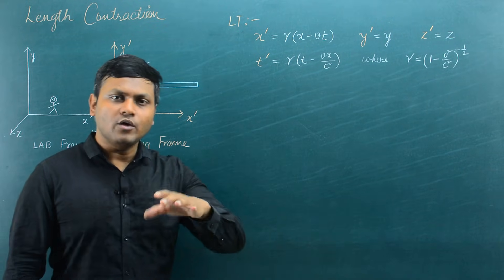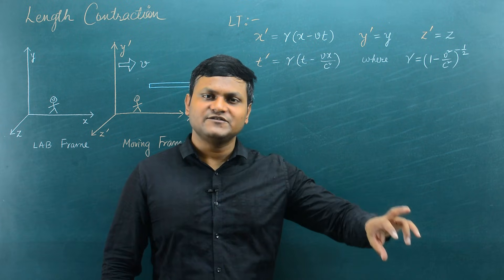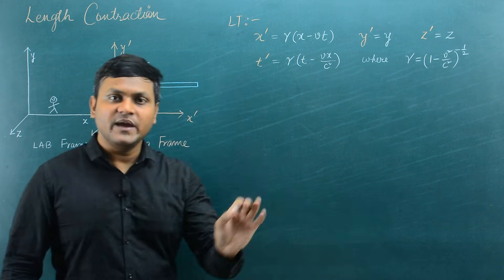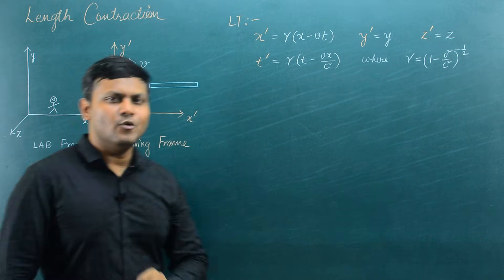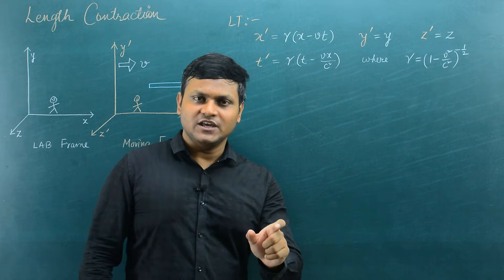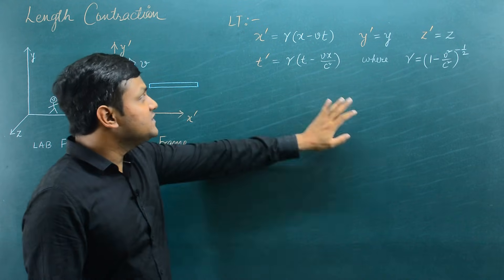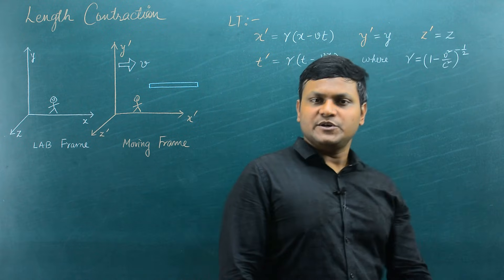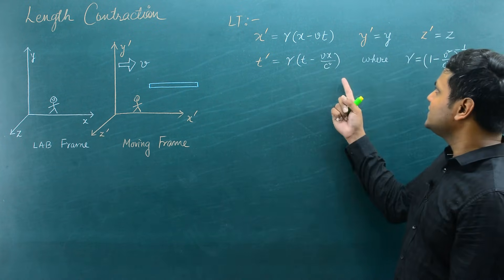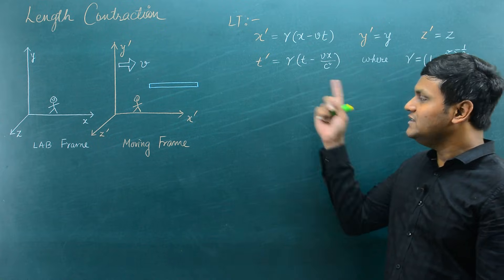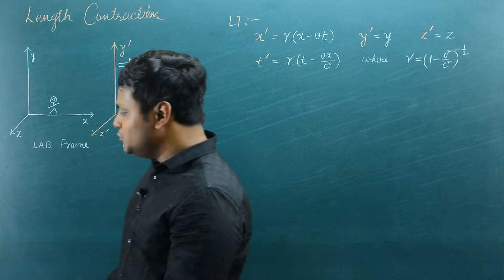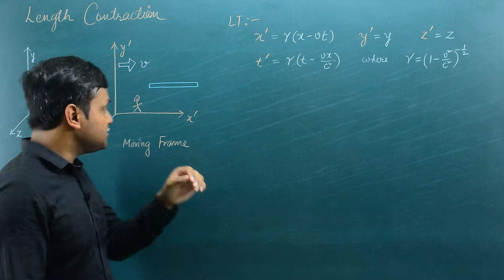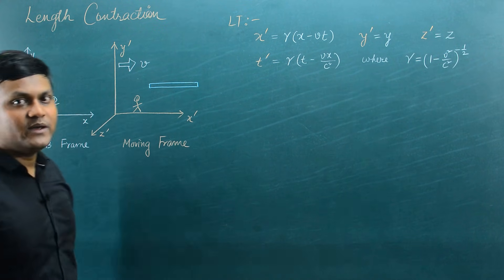As you may already know, the Lorentz transformations are a set of transformation equations that connect the coordinates of space and time between two observers in relative motion. These transformation equations are consistent with the special theory of relativity. I am going to use these transformation equations to look at the relationship that exists between the lengths of the rod as measured by each observer.